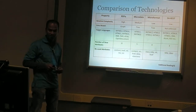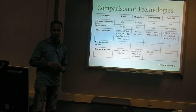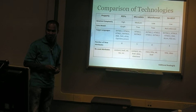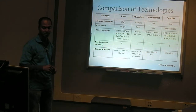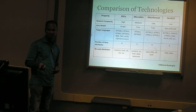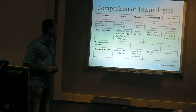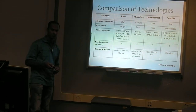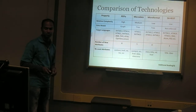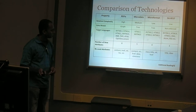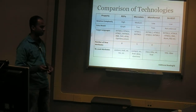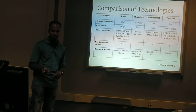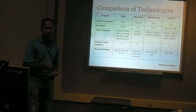We discussed the number of new attributes introduced by each technology, the attributes they reuse, the target languages, and the data model. In RDFa the data model is a graph; in SA-REST the data model is not enforced - you can have either graph or tree; but in microdata and microformats, the data model is a tree. If you're interested, you can read the additional reading material, which has very good examples for everything discussed here.